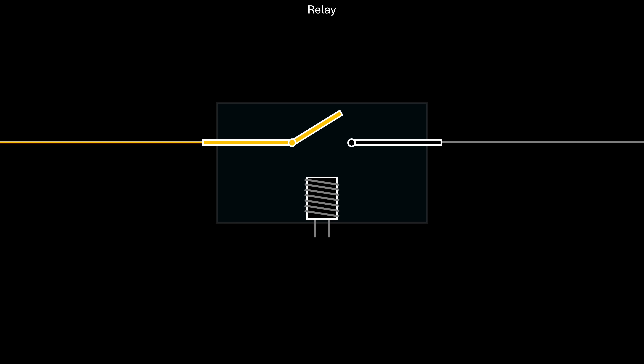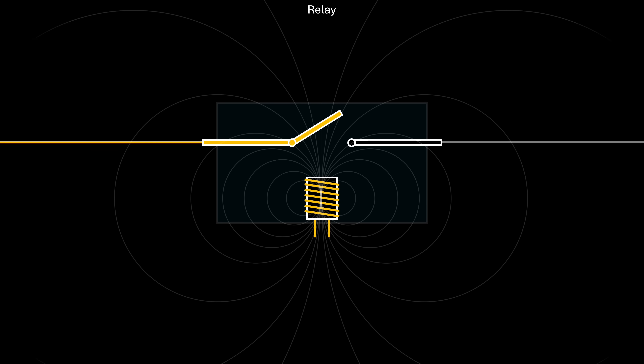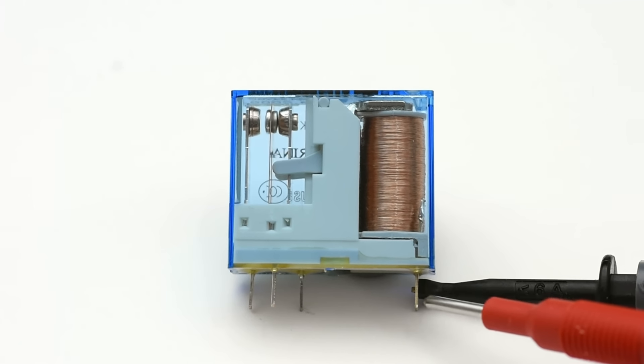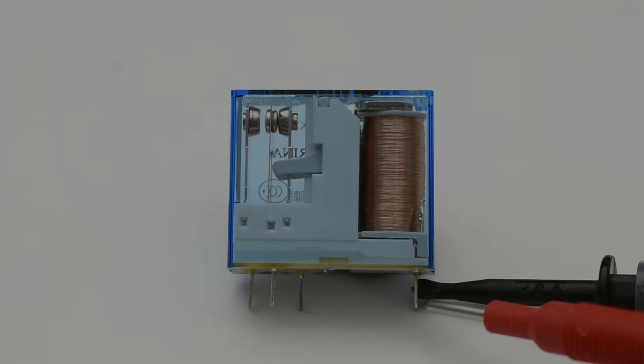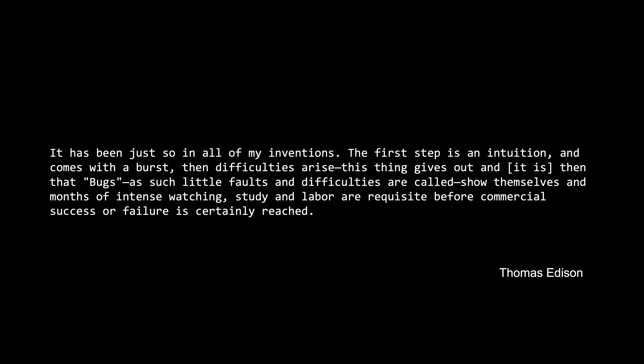A relay works in a very similar way, but it uses mechanical parts. When you apply voltage to an internal coil, it turns into an electromagnet that attracts a piece of metal, closing the circuit and allowing electricity to flow. Since relays work through an electromechanical mechanism, there's a limit to how small they can be and how fast they can switch. As shown in this letter that Thomas Edison wrote to an associate in 1878, the term bug, to describe a defect, has been part of engineering jargon since at least the 1870s, long before electronic computers or software even existed.